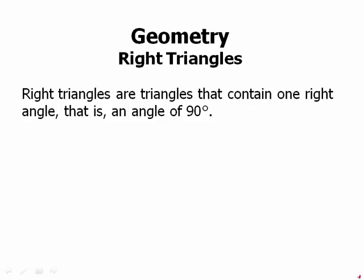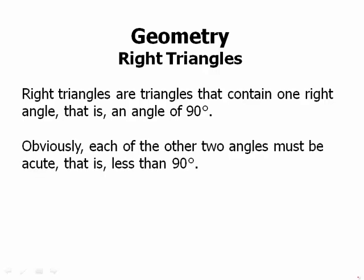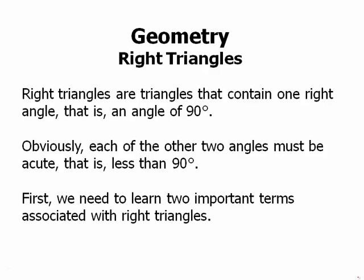Okay, now we can talk about right triangles. Right triangles are triangles that contain one right angle, that is an angle of 90 degrees. Obviously, each of the other two angles must be acute, that is less than 90 degrees. That's the only way that they would all add up to 180 degrees.